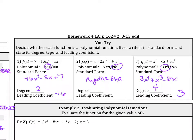So we tried this out. Number 1, that is a polynomial function. And you have to rewrite it. So negative 1.6x squared minus 5x plus 7. Our degree is 2. The leading coefficient is negative 1.6.